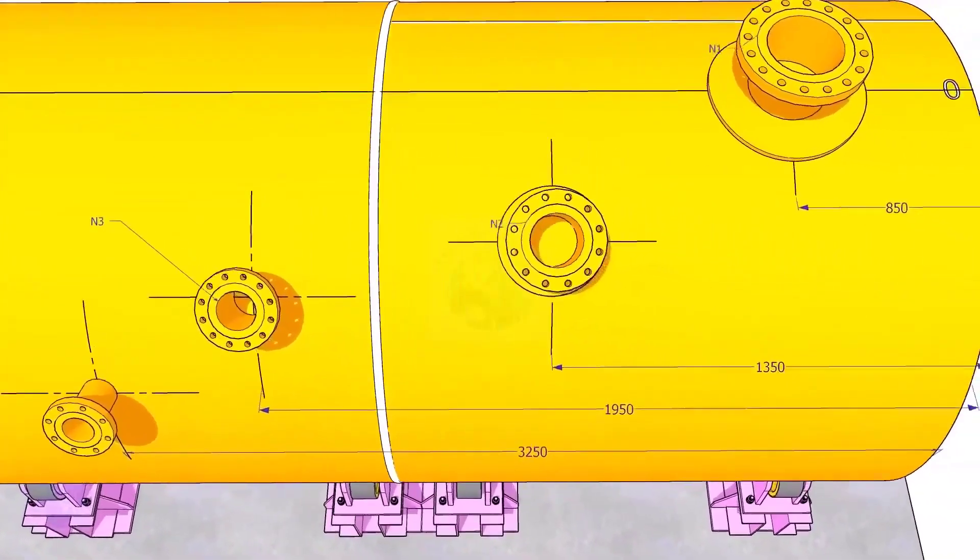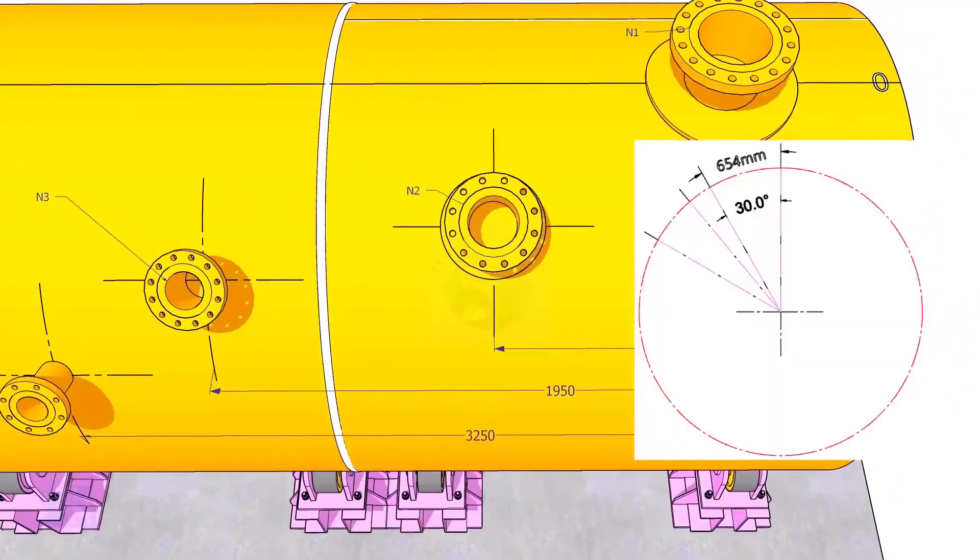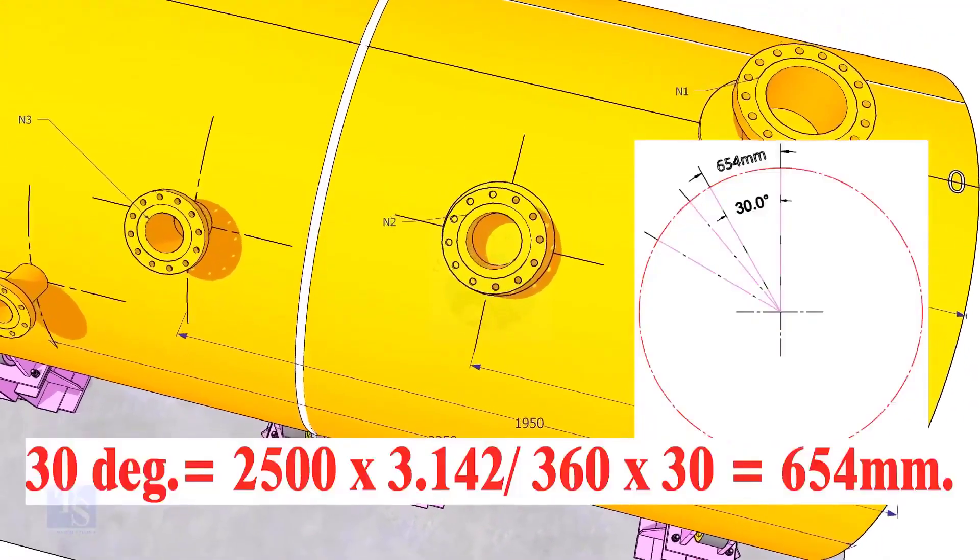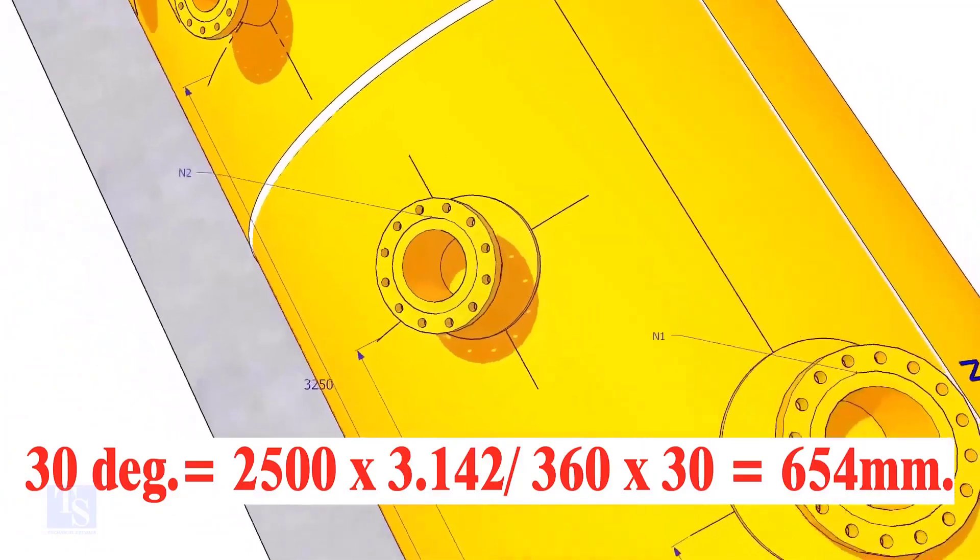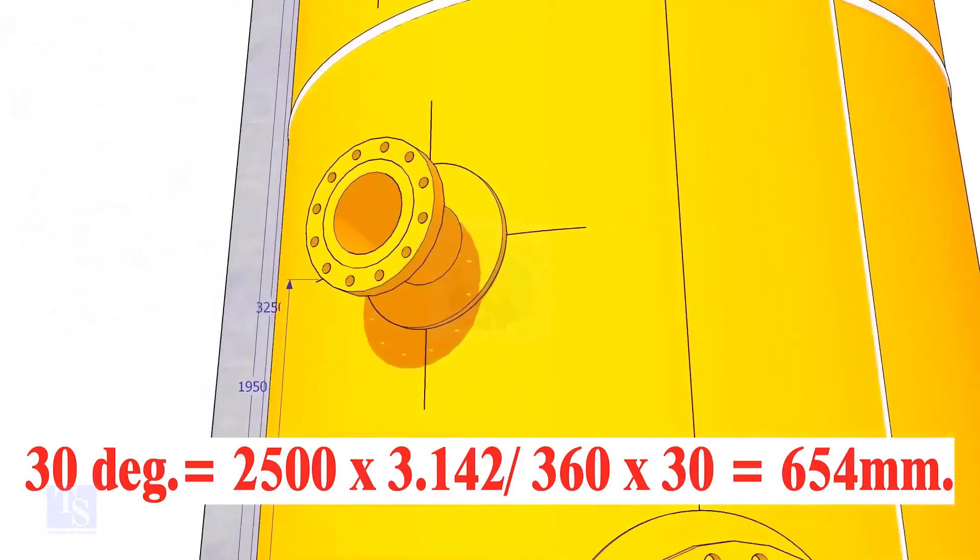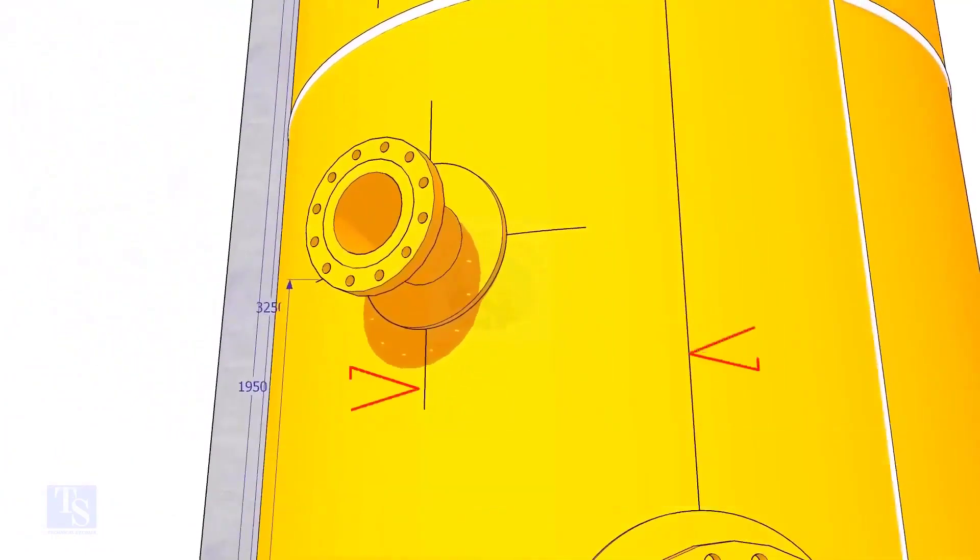Let us mark the center of nozzle N2. It comes on 30 degree anti-clockwise. Convert 30 degree to arc length. Mark this dimension at two locations as shown and draw a line.